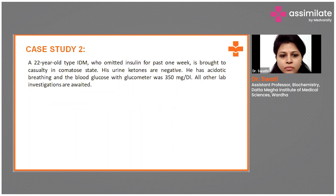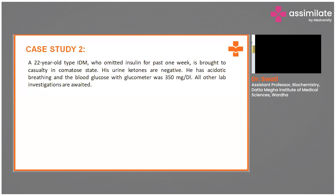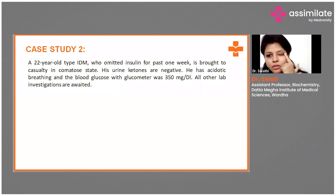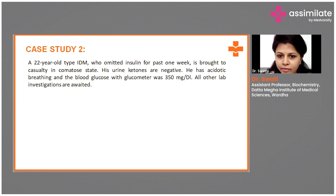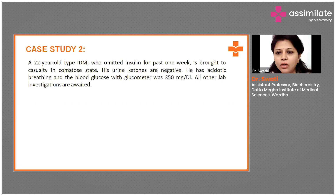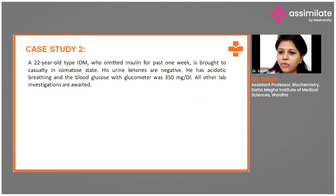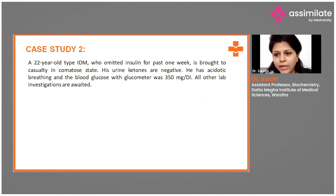D is the right answer. Coming back to the case presentation: this patient is a type 1 diabetes mellitus. In type 1 DM, diabetic ketoacidosis is more common. He was not on insulin for the past one week and came to casualty in a comatose state with negative urinary ketones. He has acidotic breathing — also called Kussmaul's breathing — which is a typical feature of DKA, because acidosis is not seen in HHS. Blood glucose is 350 mg/dL; in DKA it mostly exceeds 300, while in HHS it mostly exceeds 1000.